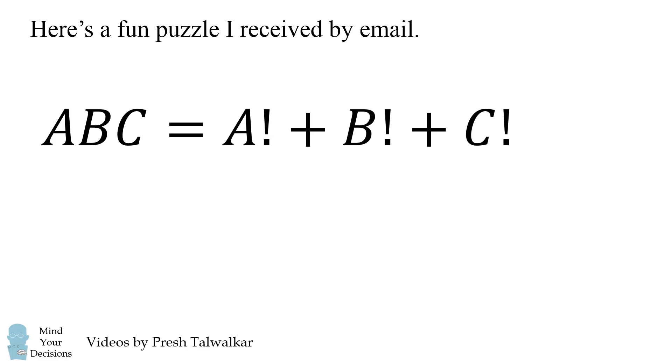ABC is equal to A factorial plus B factorial plus C factorial. None of the digits is equal to zero and you need to solve for the three digit number ABC.